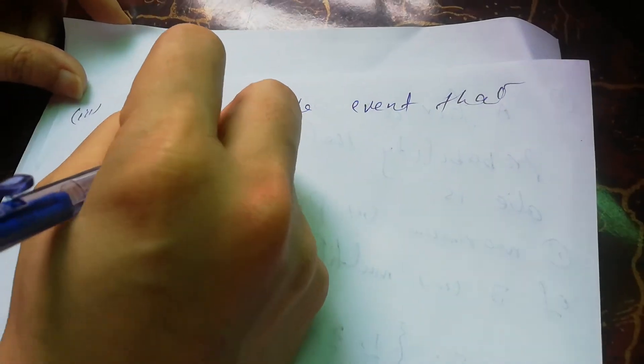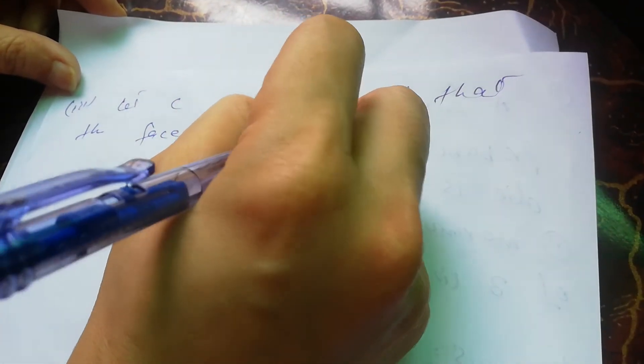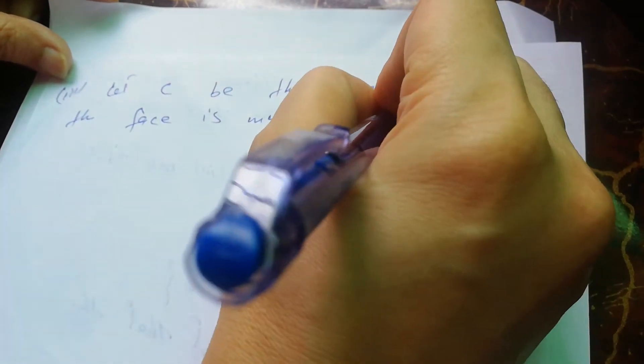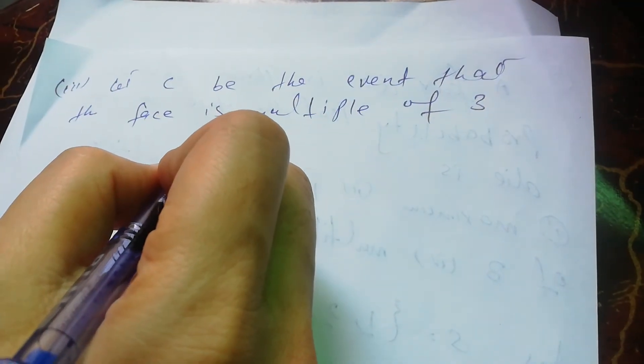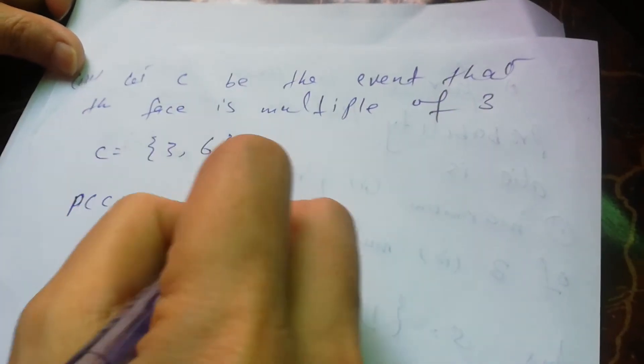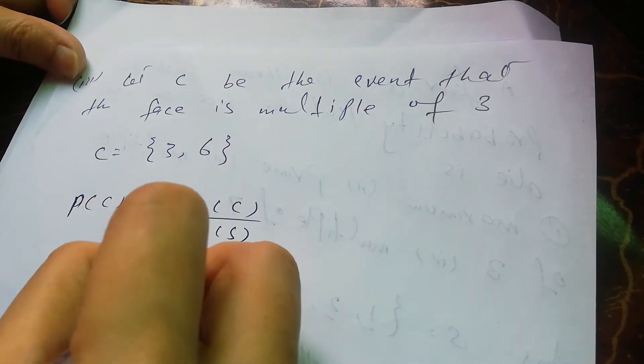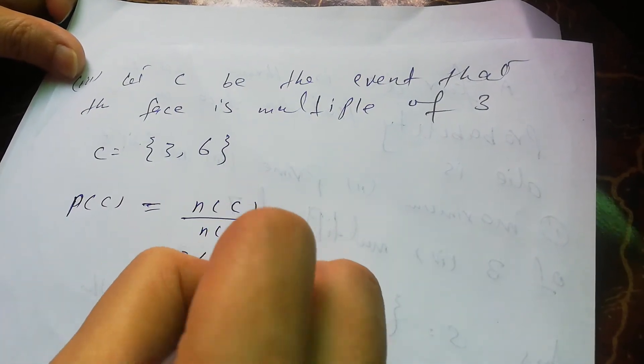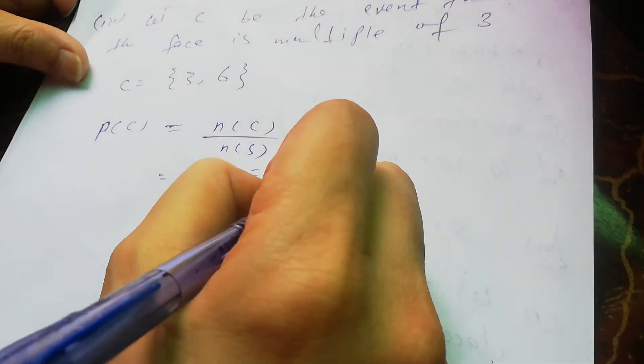Third, let C be the event that the face is a multiple of 3. The multiples of 3 in the sample space are 3 and 6, so C = {3, 6}. The probability of C is n(C) divided by n(S), which is 2 over 6, equal to 1/3.